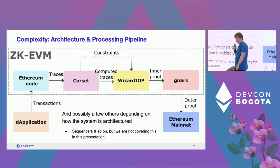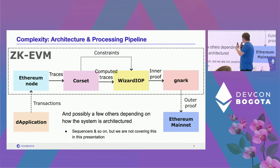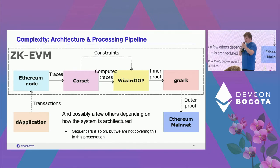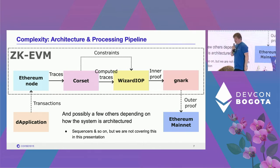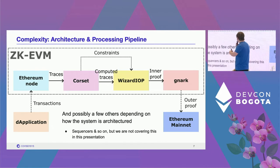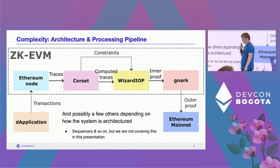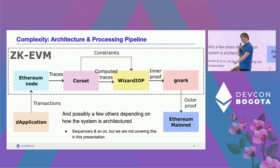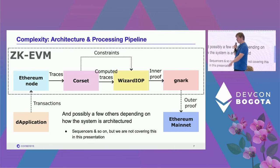Here's the basic setup: you have a modified Ethereum node, an execution client, which receives transactions sent by users or dApps. We plug into this execution client and extract data to fill traces. These preliminary traces are fed into a tool called Corset, which produces the constraint system and expands the remaining parts of the trace. Constraints and expanded traces are fed into our inner proof system, then into a verifier circuit over BN254. This is where we plug in with Gnark, which produces the outer proof posted on mainnet.